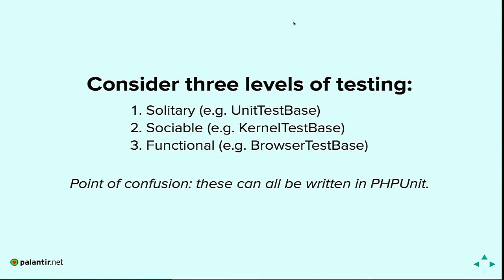Here's how to think about solitary testing overall. With solitary, you use PHPUnit's unit test base. With sociable, it might be a kernel test — Symfony has a kernel test class you can implement. Then there are functional tests. In terms of lines of code executed during a test: functional executes the most, solitary the fewest. But solitary gives you the most control. You can do all types of testing with PHPUnit — they're different strategies and you should use the right one for the situation.